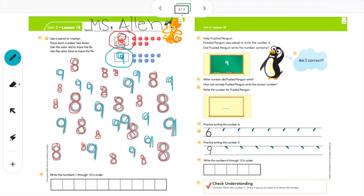Awesome. I think that I have traced all my eights and all my nines. Now I'm going to pick up my erasable pencil again. And down here it says write the numbers one through ten in order. So I'm going to start with the number one. I'm going to write all my numbers.